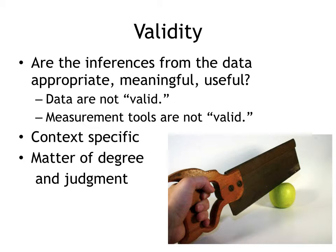Data are not valid. You'll hear people say 'that data set was valid' — that's not a correct use of the term. Going back to my silly example of measuring your height, the number of centimeters tall you are is neither valid nor invalid. The validity is what you use that data for. The meter stick or tape measure — the tool used — is not valid or invalid. The validity is the connection between what is measured and what you are trying to use that data to show. Validity is very much a matter of degree or judgment.